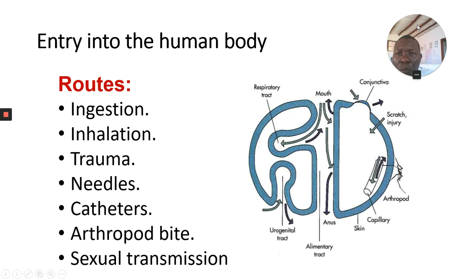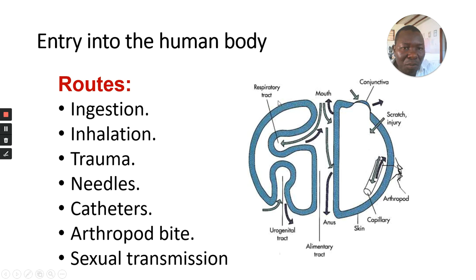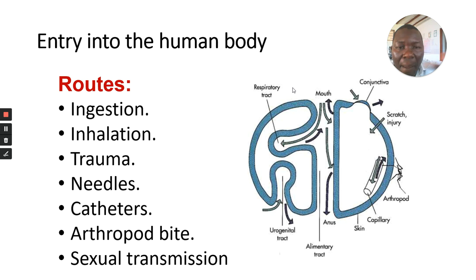We ask ourselves: how do bacteria enter our body in the first place? The routes are: they can be ingested, inhaled, or through trauma, by needles, catheters, arthropod bite, or sexual transmission. We need to understand that we have the respiratory route, where we can get some of those bacteria. The commonest bacteria that cause respiratory infection include Mycobacterium tuberculosis, which causes tuberculosis, and Streptococcus pneumoniae.